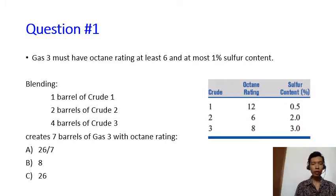if I blend one barrel of Crude 1 oil, two barrels of Crude 2 oil, and four barrels of Crude 3 oil, I will create seven barrels of Gas 3 with which one of this octane rating?